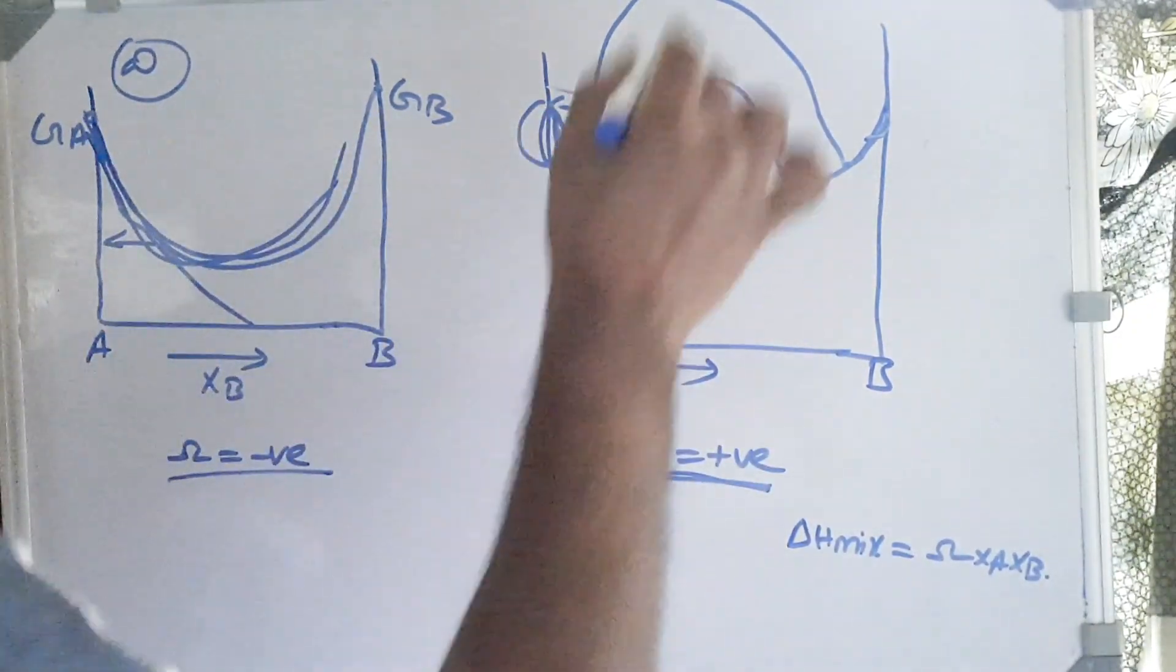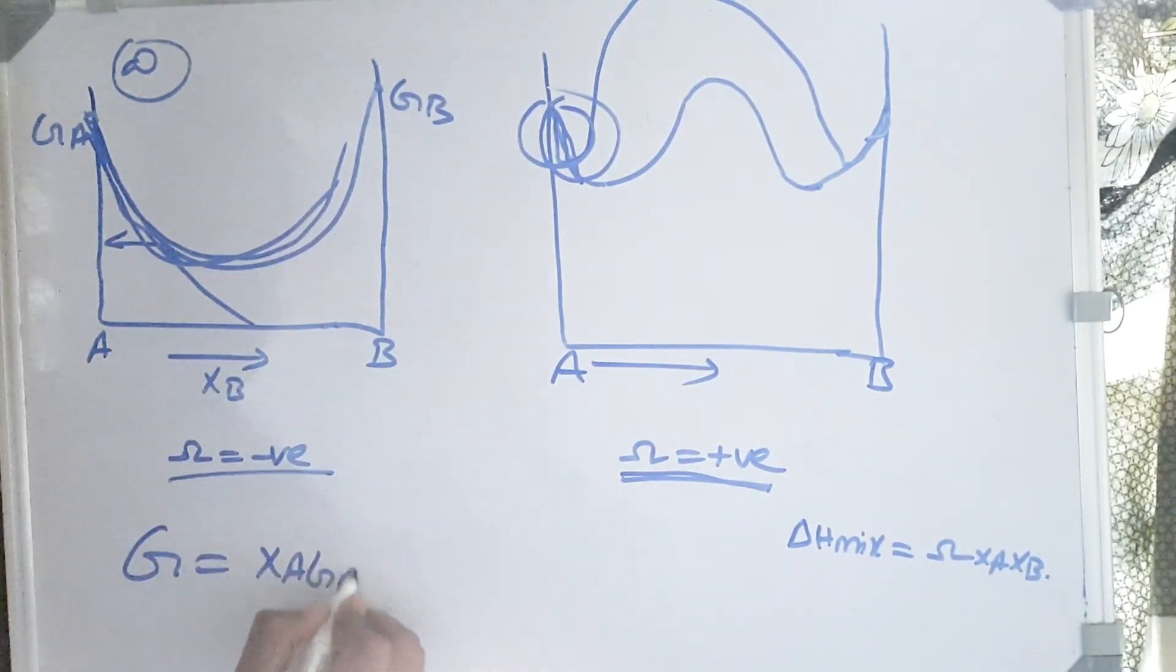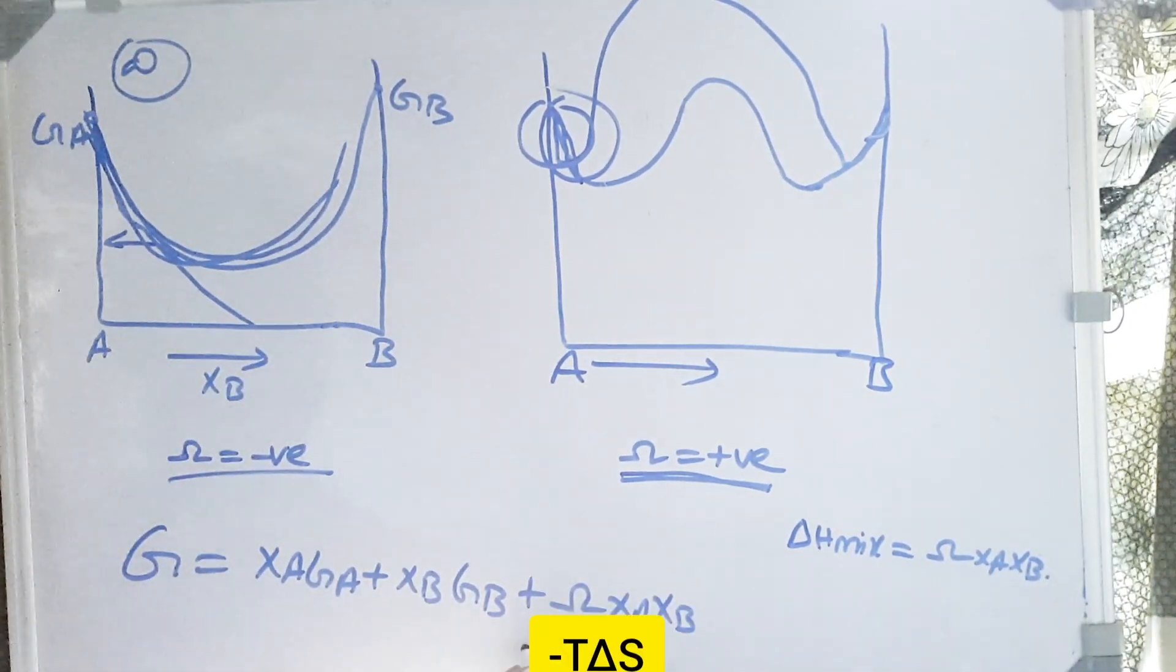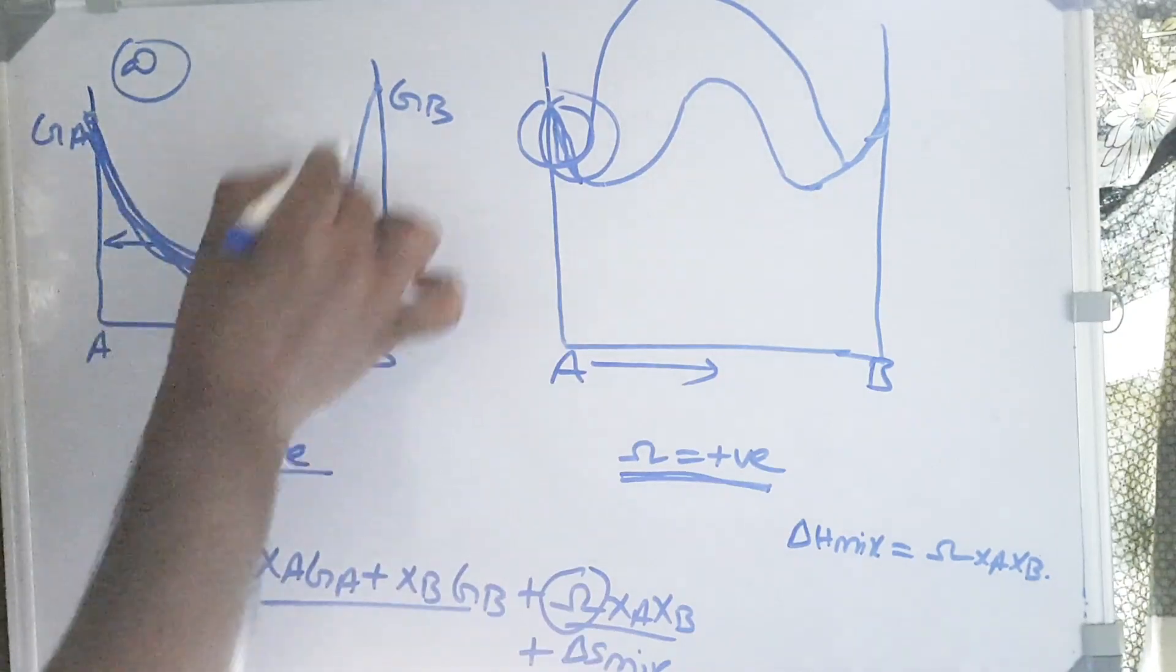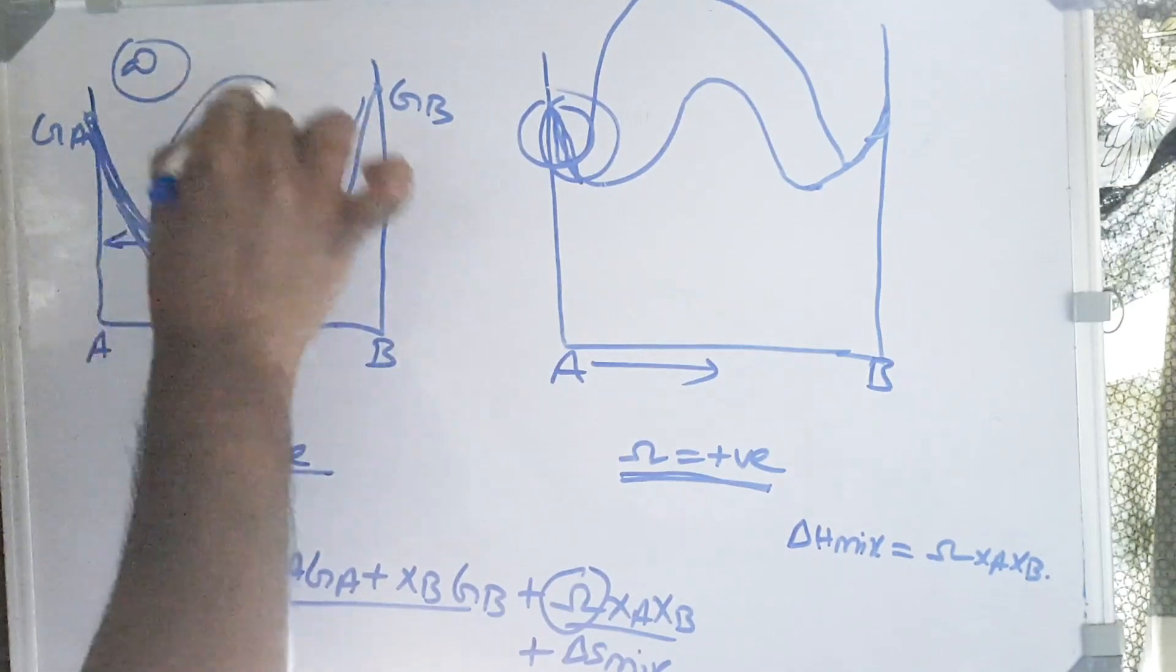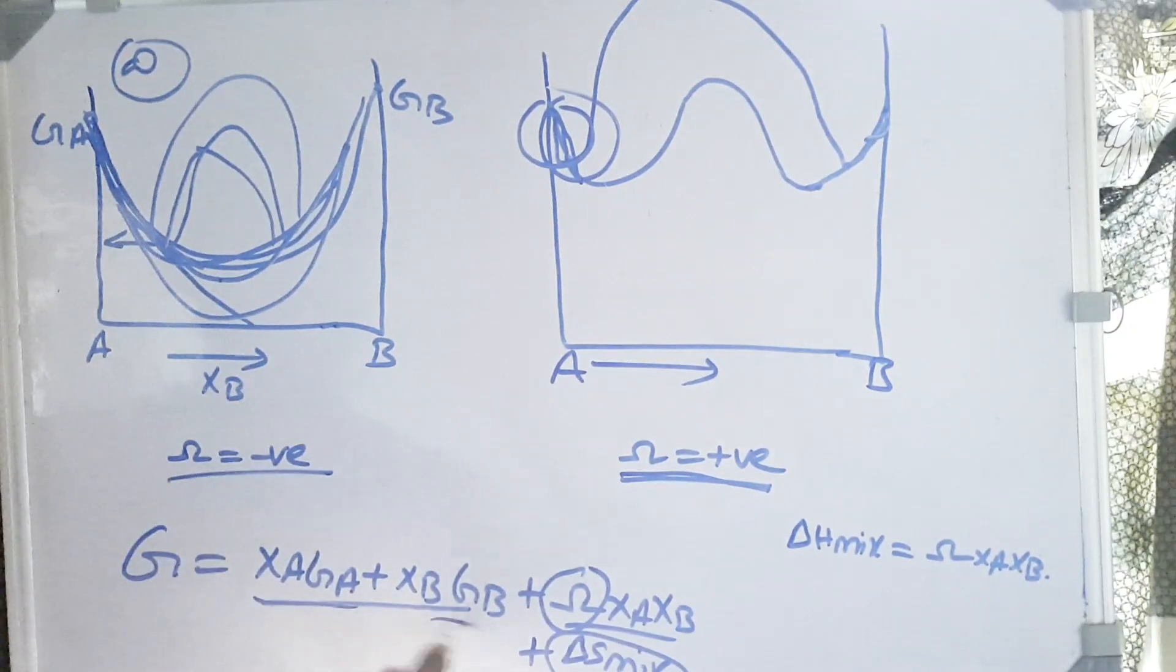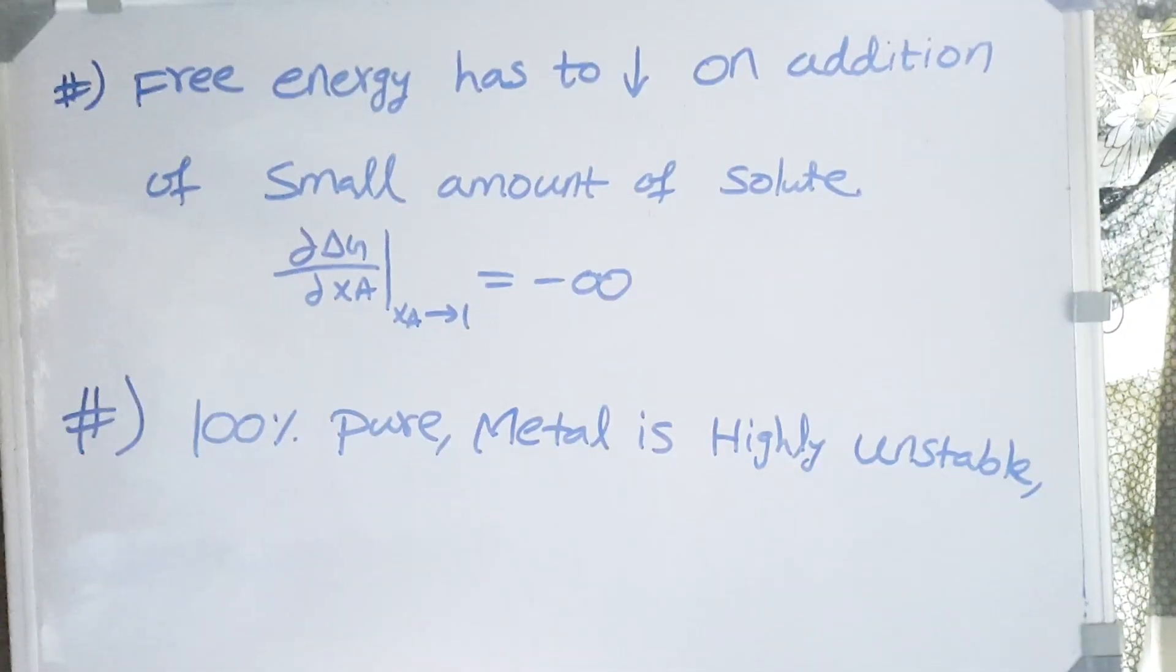I hope you understand why the curves are looking like this. These all come from the basic equation: G equals XA·GA + XB·GB + delta H mixing, which is omega [XA·XB] minus T delta S mixing. All these parameters affect this curve. If omega is negative, we get this lower and lower curve. If omega is positive, this trough becomes the crest like this. And delta S mixing is always positive. GA and GB are the parameters which are affecting the nature of the curve.